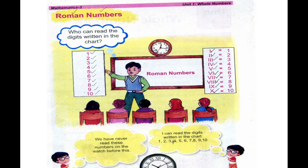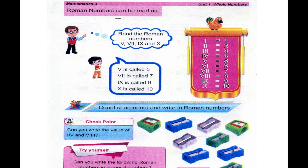I can read the digits written in the chart: 1, 2, 3, 4, 5, 6, 7, 8, 9, 10. Next, we can read the Roman Numbers. Roman Numbers can be read. Now you can read the Roman Numbers.